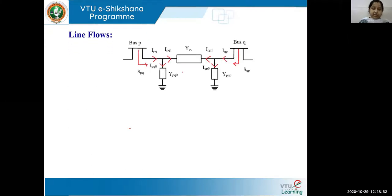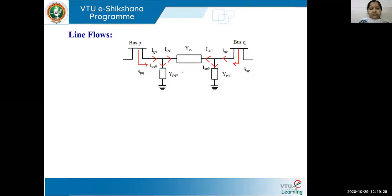Now let us understand how to calculate the line flows. I have taken a simple network: there is bus P and bus Q whose series line impedance is YPQ, and half line charging admittances are YPQ0 on both sides. The current flowing from the Pth bus toward the Qth bus is designated as IPQ.